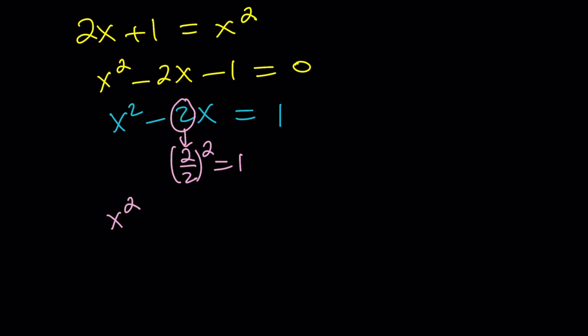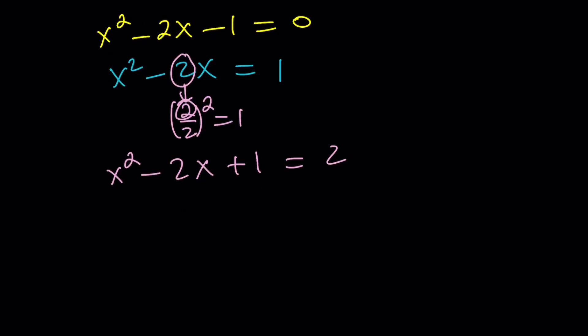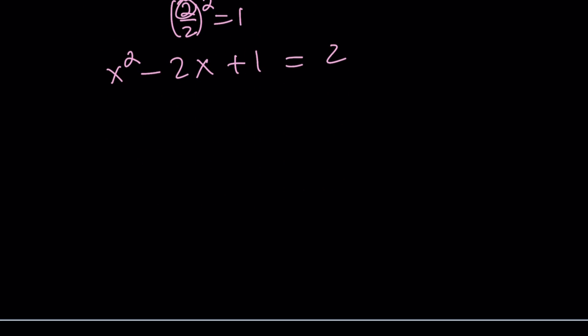That's always going to work. In case of b, instead of the 2, you can figure out what you need to add. So now I'm going to add 1 to both sides. And that's going to give me a perfect square on the left hand side, which is perfect.